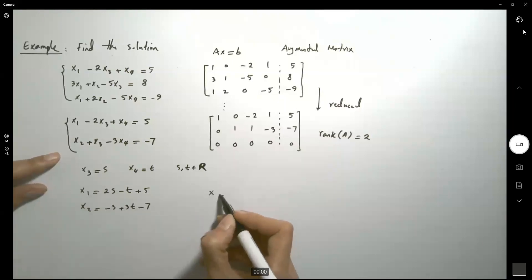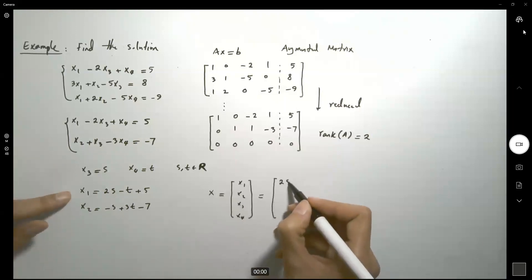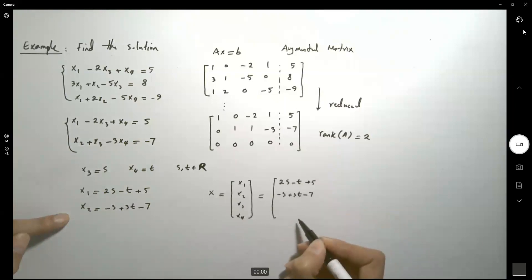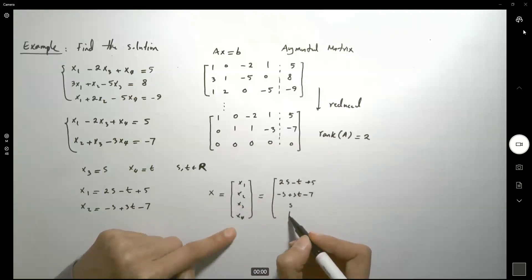So basically your x can be written as x1, x2, x3, x4, which is nothing but 2s minus t plus 5, x2 is negative s plus 3t minus 7, your x3 is s, and your x4 is t.